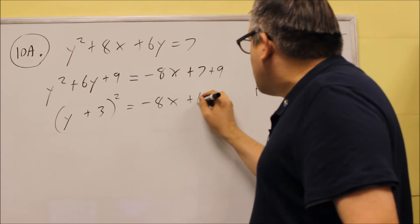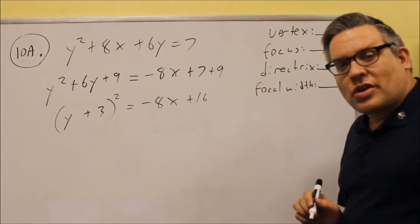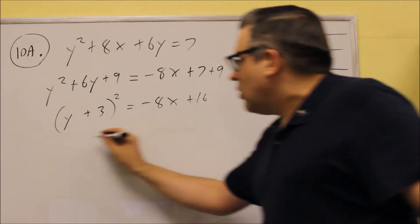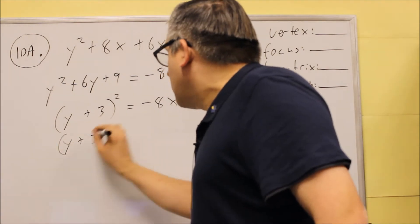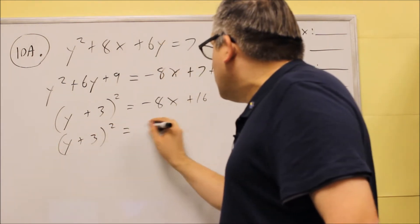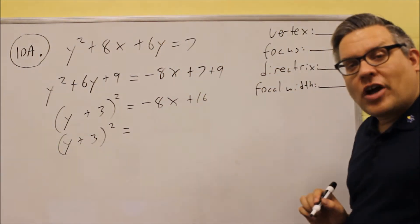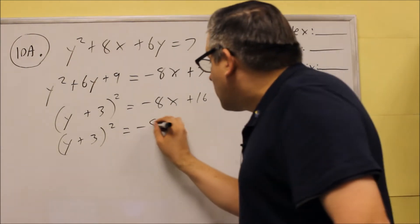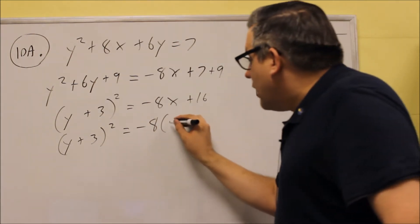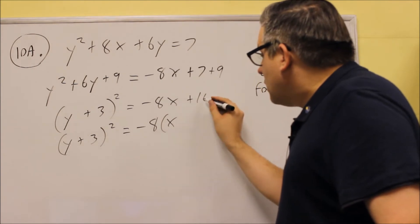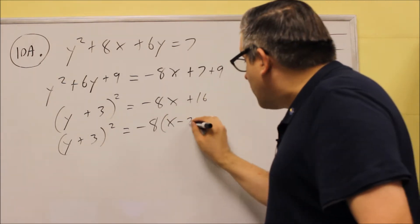Now over here I need to simplify this, I get negative 8x plus 16. Now we're almost done, we want to do one more step, and one more step will be to factor what you have after the equal sign. I'm going to factor out a negative 8 from there, and you'll get x, and then 16 divided by negative 8 is negative 2.